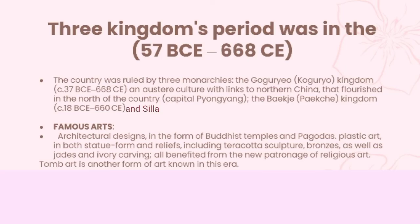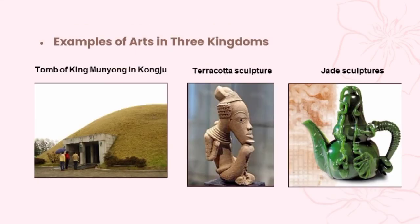The Three Kingdoms period was from 57 BCE to 668 CE. The country was ruled by three monarchies: the Koguryo Kingdom, the Baekje, and the Silla. The famous arts include architectural designs in the form of Buddhist temples and pagodas, plastic art in both statue forms and reliefs including terracotta sculpture, bronze, as well as jades and ivory carving, all benefiting from the new patronage of religious art. Tomb art is another form of art known in this era.